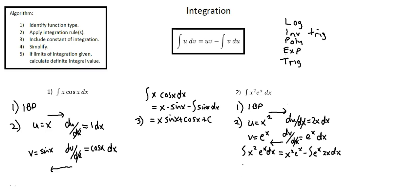Continuing with our integration, looking at the right-hand side of the equation: equals x squared times e to the power of x, minus the integral of e to the power of x times 2x with respect to x.